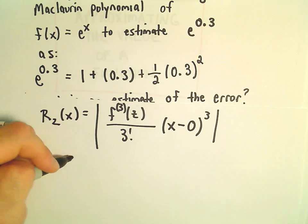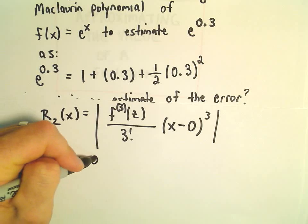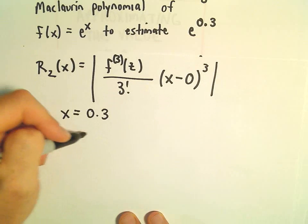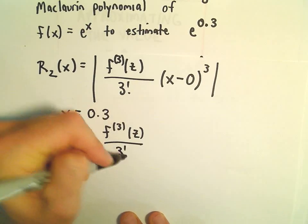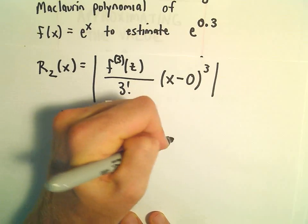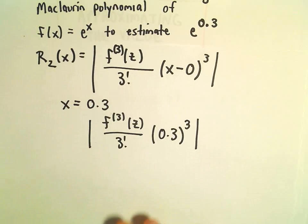So a couple things here. Our x value in this case is 0.3. So we've got the third derivative at z over 3 factorial, then we'll just have 0.3 cubed. Recall that z is some value in between x and c.